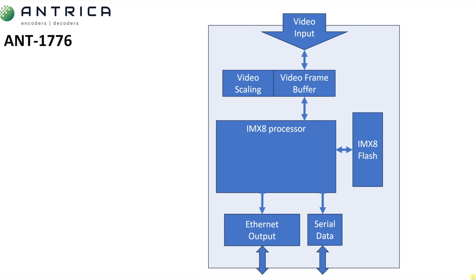On the screen I'm showing you the basic block diagram of the new ANT1776. This is a H.264, H.265 video encoder. As you can see at the top, we have a variety of video inputs. These are fed into a video frame buffer, and then we use an IMX8 to encode these into either H.264 or H.265.